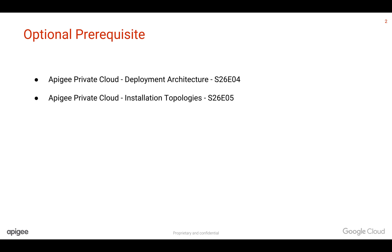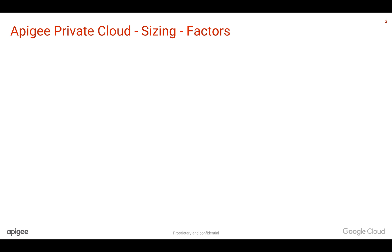Optional prerequisites for this video: you need to understand the Apigee Edge Private Cloud Deployment Architecture as well as the installation topologies. For that, you can refer to earlier Formate Videos. Let's talk about what are the different factors you need to consider before estimating the hardware size for Apigee Edge Private Cloud.